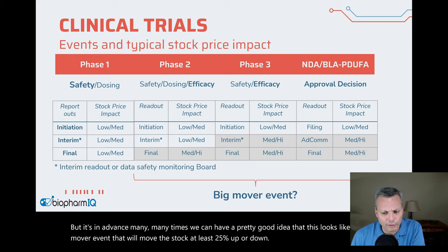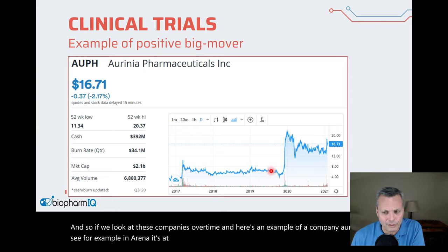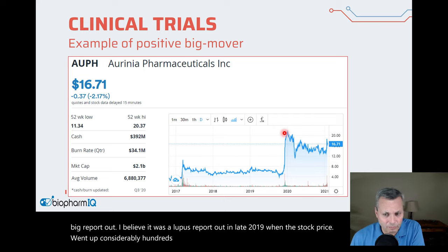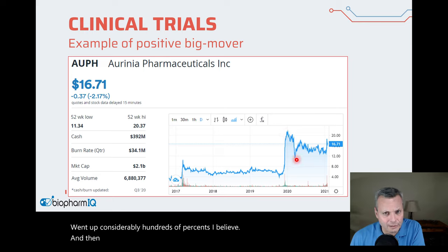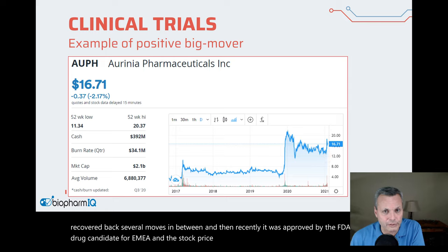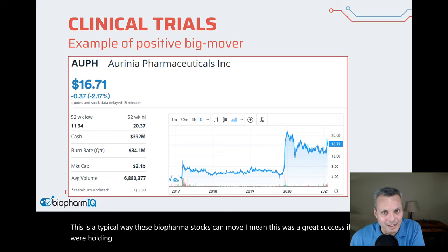Looking at Orinia as an example — the stock sat around $5 to $6 a share for some years, but then there was a big readout, a lupus report out in late 2019, when the stock price went up hundreds of percent. Then the pandemic hit, the stock price went down more than 25% and recovered back. Recently, it was approved by the FDA and the stock price went up by more than 25%. This is a typical way these biopharma stocks can move.